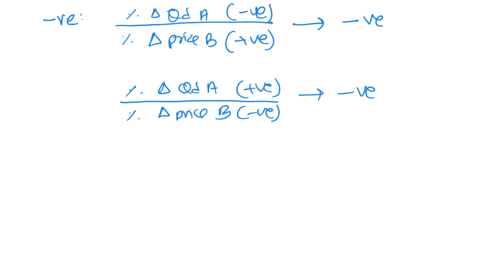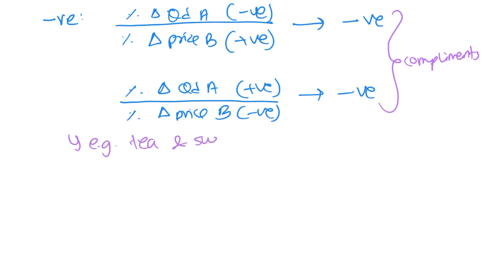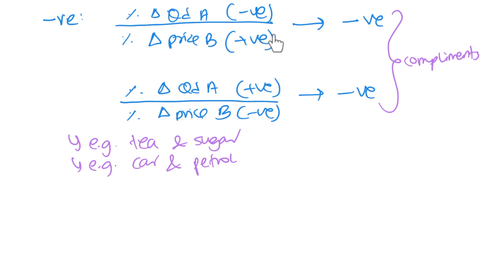So these two products are complements. Can we give an example of complementary products? What about tea and sugar? That's a popular one, especially in Pakistan. We could also have a car and petrol — that's a good complementary pair. You'll need to explain how complementary products have an inverse relationship: if the price of one thing goes up it leads to the demand of the other falling, or if the price falls the demand rises. To make your point stronger, you could give an example of each.